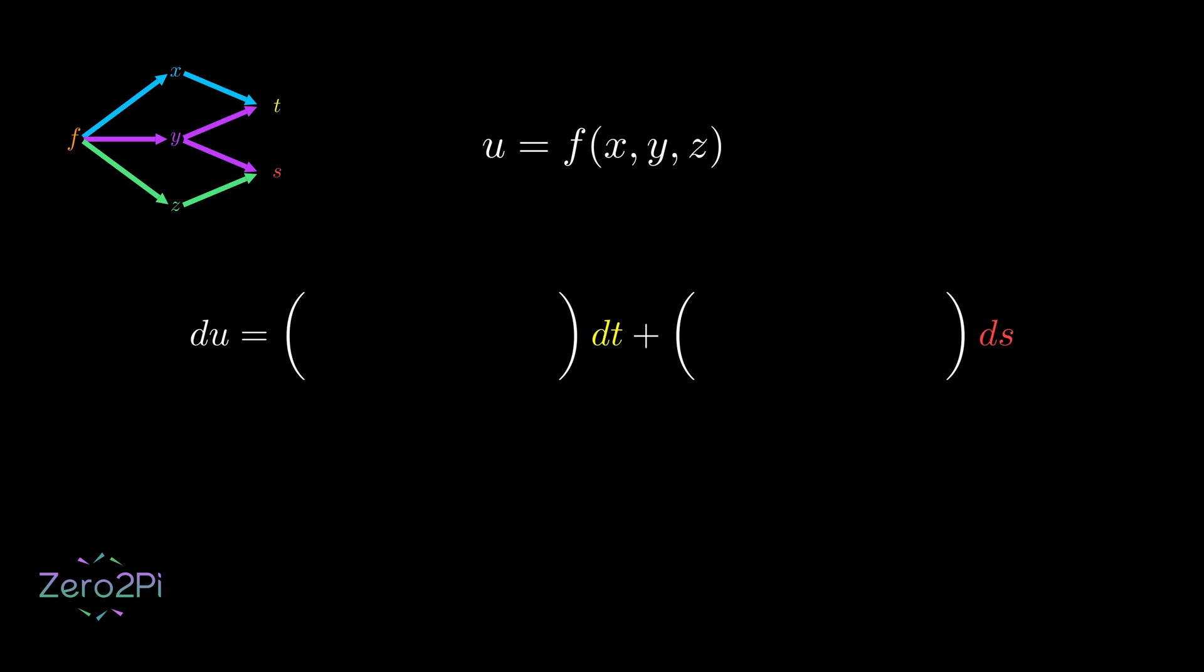we look at all the paths from u to t. u changes with x and x changes with t. So, we have the partial derivative of u with respect to x times the partial derivative of x with respect to t. u also changes with y and y changes with t. So, we add ∂u/∂y times ∂y/∂t. Now, you might be thinking,